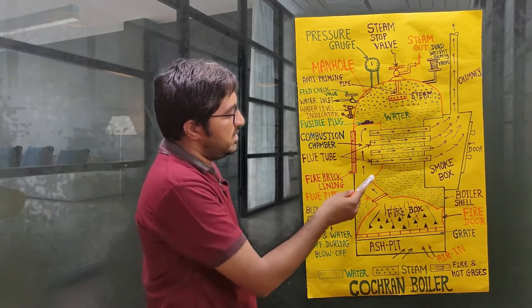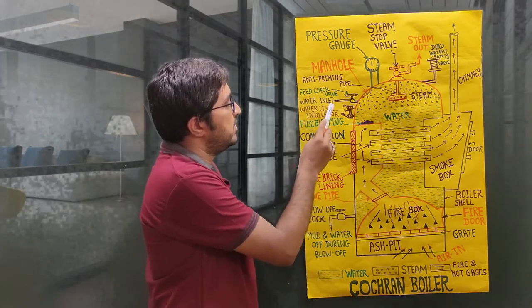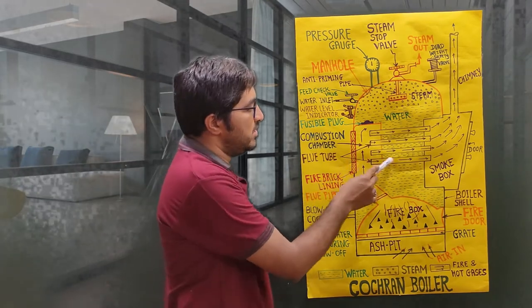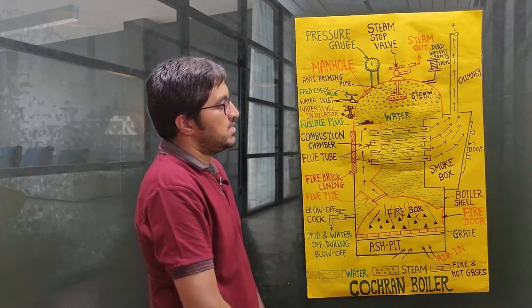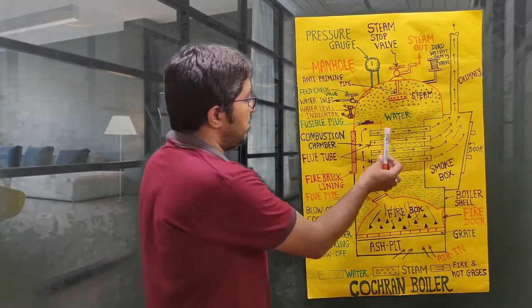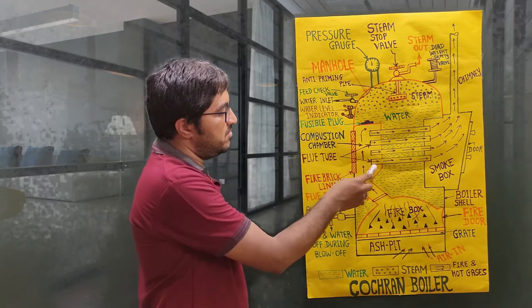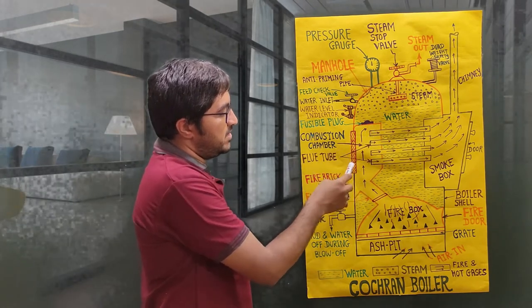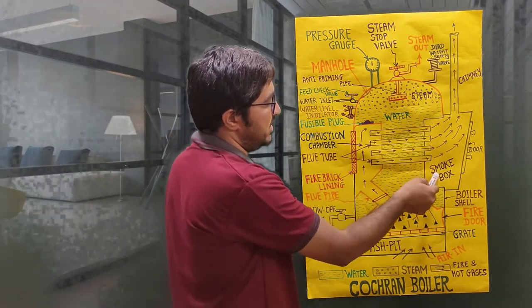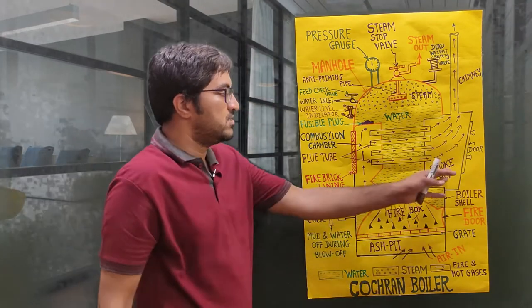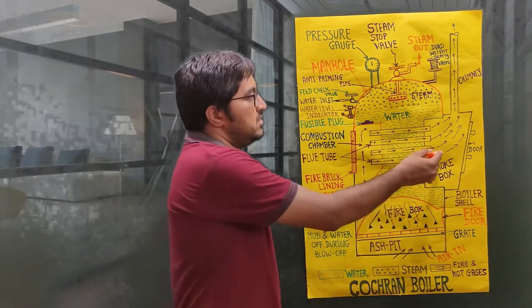Surrounding the tubes, water is filled through the feed check valve. The flue gases pass through the tubes and transfer heat to the water, causing it to boil. One side of the combustion chamber is connected to the fire bricks and tube openings, and the other side has a smoke box. The function of the smoke box is to collect the hot exhaust gases and then release them to the atmosphere through the chimney.